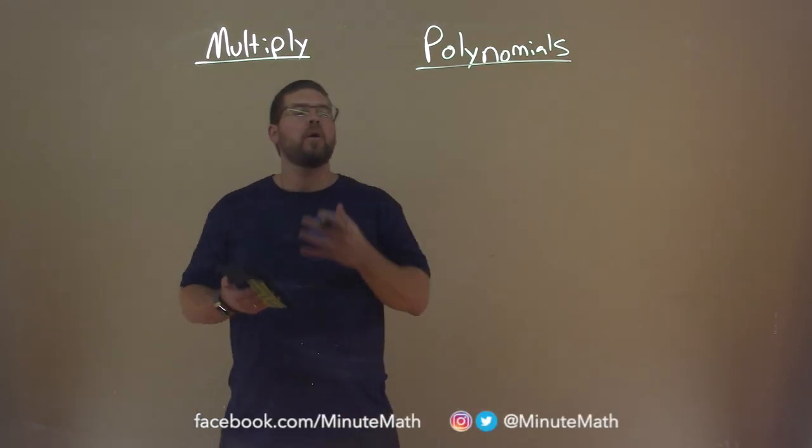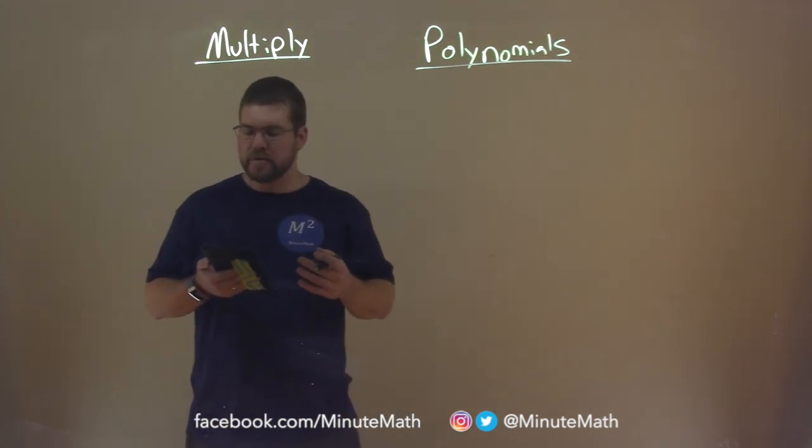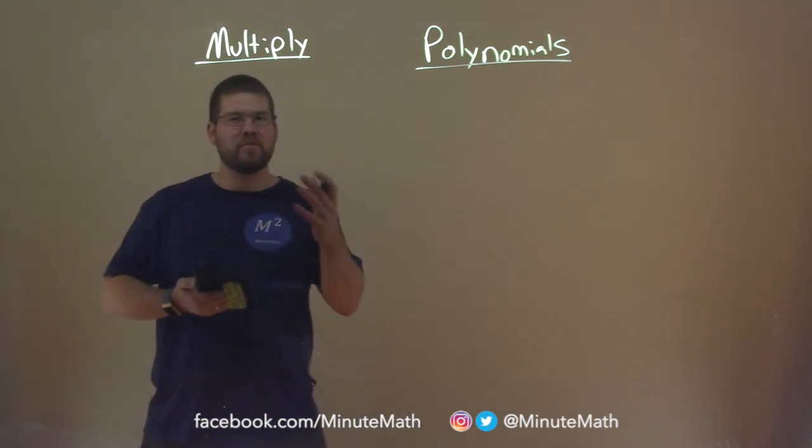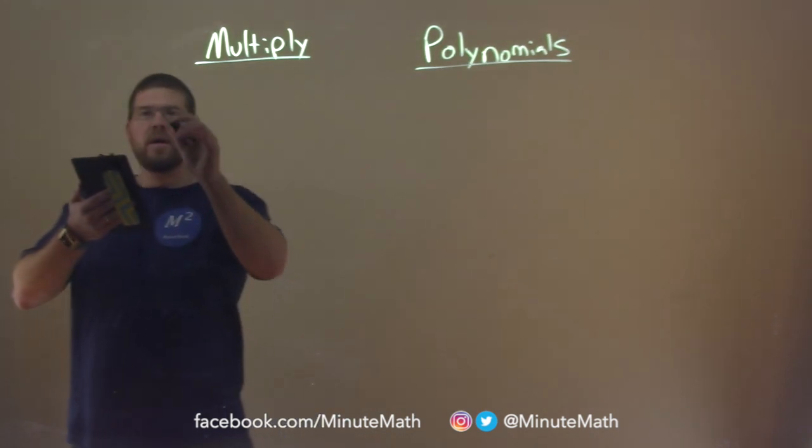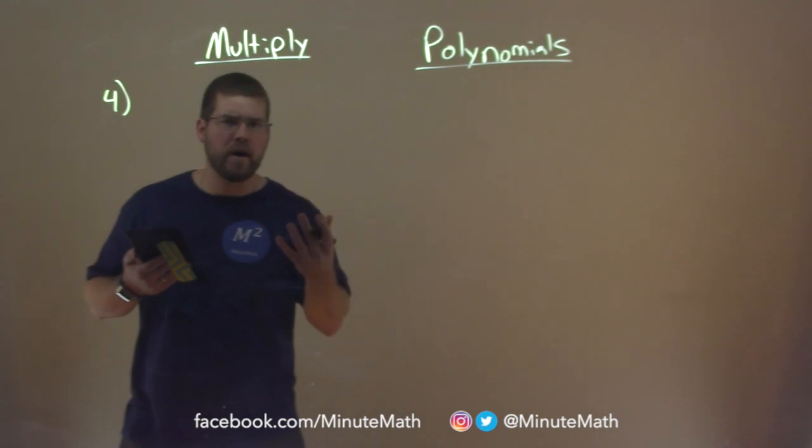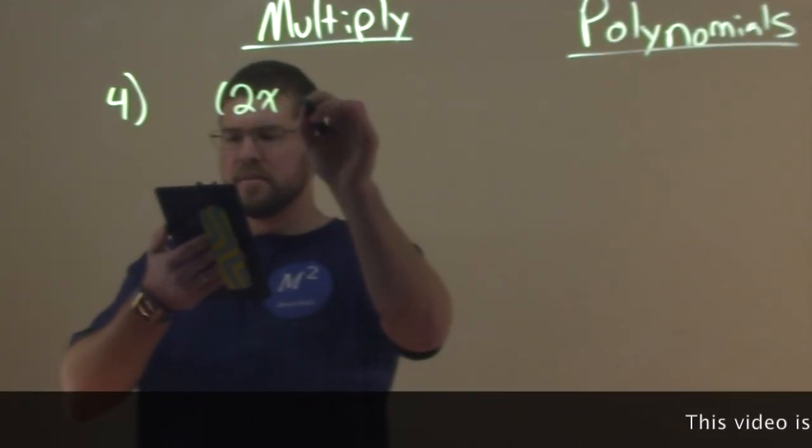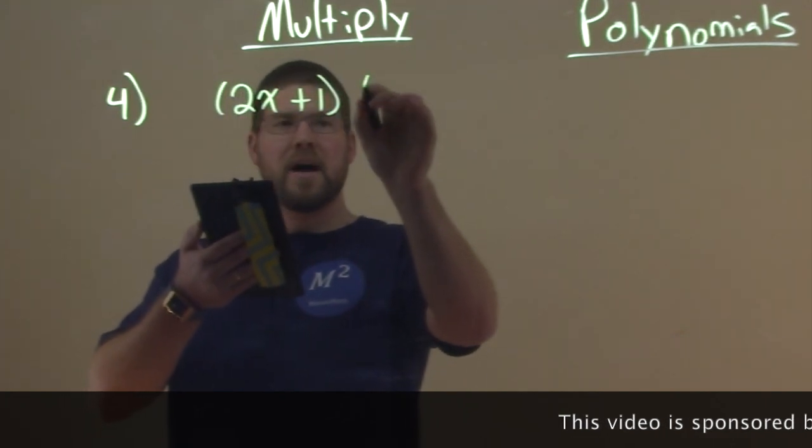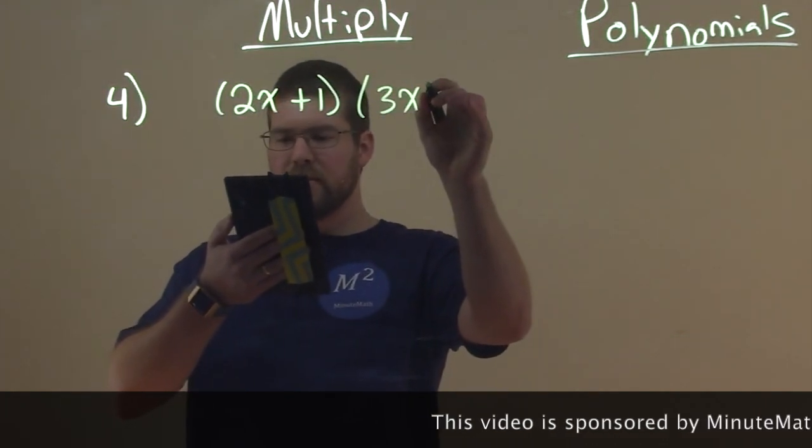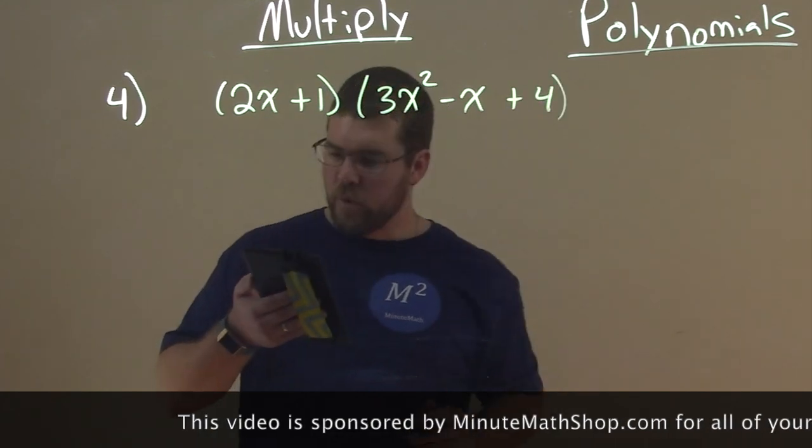So one way of multiplying polynomials is using the distributive property. Let's use an example here to kind of see what's going on. So example four, we want to find the product multiplication here. We have 2x plus 1 times 3x squared minus x plus 4.